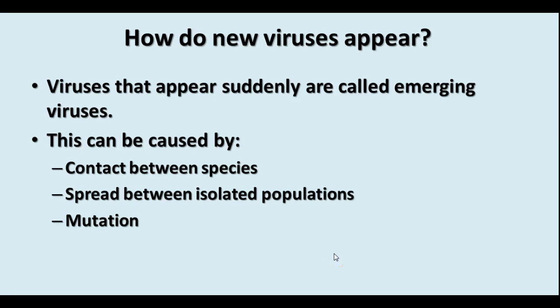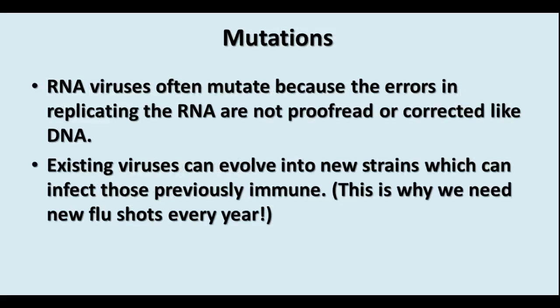So how do you get new viruses in a population? These are called emerging viruses. Contact between species sometimes results in the transfer of viruses from one species to another, and viruses usually change a little as that happens. Viruses can also spread between isolated populations, and mutation can definitely have an effect. You can catch a cold every year because the cold virus mutates very easily and there are hundreds or thousands of strains around. RNA viruses mutate pretty often because there are many more errors in replicating RNA, and they're not proofread and corrected the way DNA is.